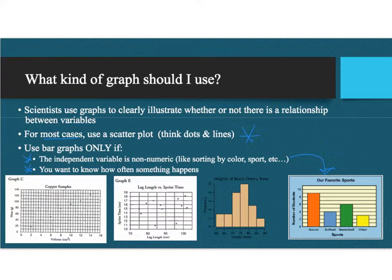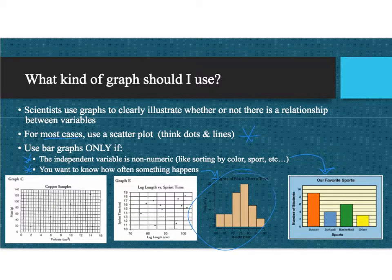If it's non-numeric, like this graph showing 'favorite sport' where they asked people what their favorite sports were — soccer, softball, basketball, other — those are not numeric numbers, so we can use a bar graph. Also, the other option is if we want to know how often something happens — that's what we call a histogram. This one right here is showing the frequency of the height of black cherry trees.